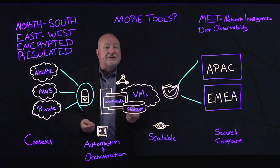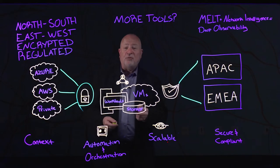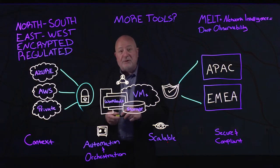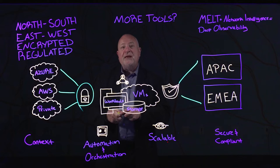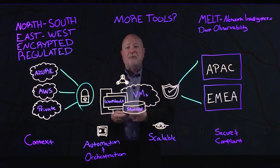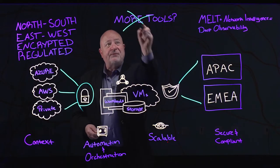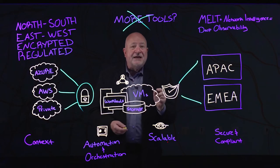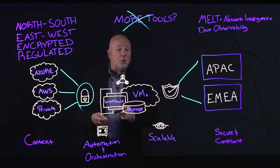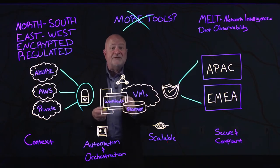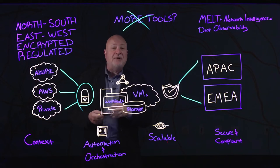The answer is you need an approach like Gigamon. You need what we call the Deep Observability Pipeline. Because the answer to this problem is not more tools — the answer is to get the tools that you've got working better together. And that's what the Gigamon Deep Observability Pipeline is all about.